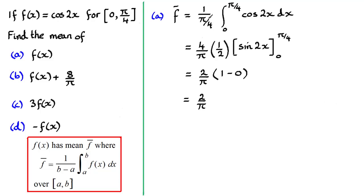We've got f bar equals 1 over b minus a. Subtracting the limits — pi over 4 and zero — gives pi over 4 in the denominator. We integrate cosine 2x from 0 to pi over 4. The integral of cosine 2x is a half sine 2x. Substituting the limits, you get a half times 4 over pi, which is 2 over pi. When you substitute pi over 4 for x you get 1, and zero when you substitute zero, giving 2 over pi as f bar.